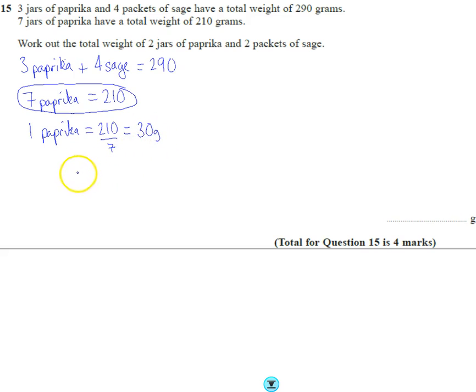So if we know that, then we're going to need this in a sec. So we know 2 paprika is going to be 60 grams, and I'm going up to 3 paprika. The reason I'm doing that is it's going to be 90 grams.